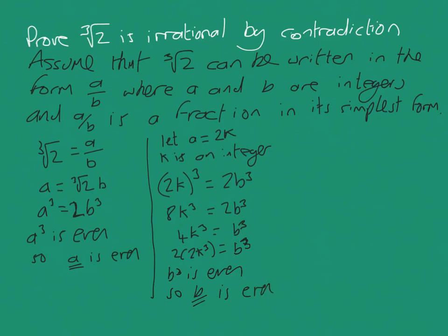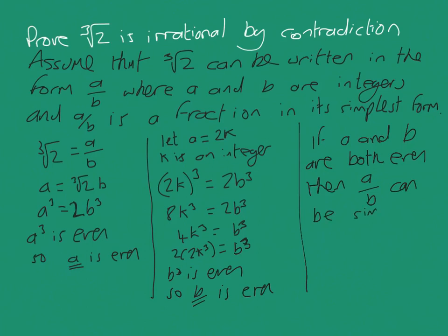So b is even. So we know a is even. We know b is even. So if a and b are both even, then a over b can be simplified. This contradicts the statement.